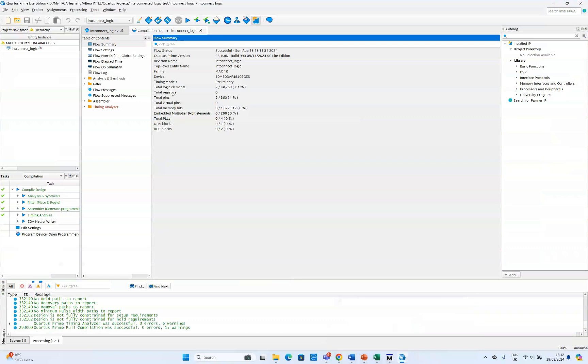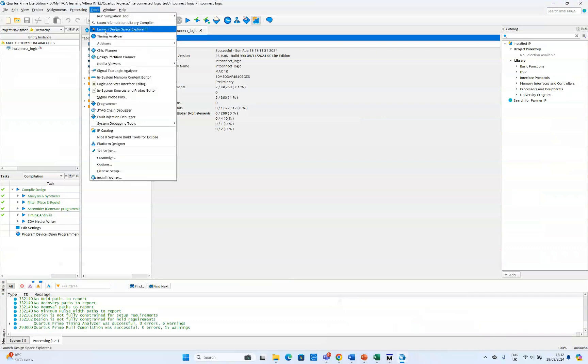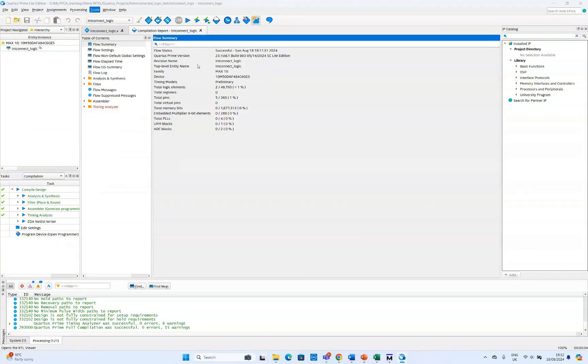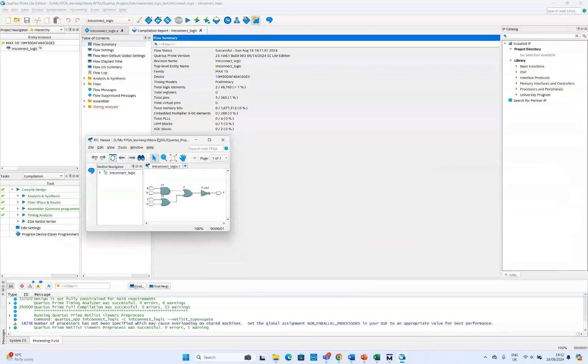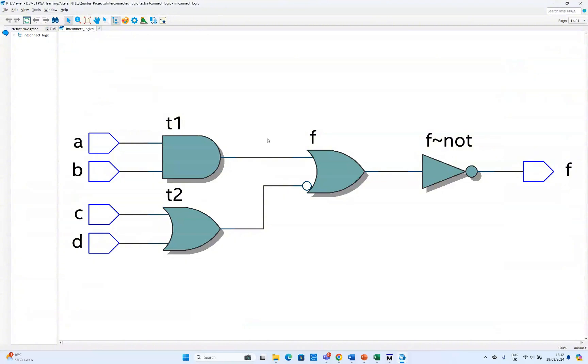So another thing we would like to show you is the netlist or netlist diagram. So if you go to the netlist viewer and if you click the RTL viewer, then you can see the schematic created from our Verilog code and it looks like this. So the only extra thing here is this NOT gate. So as we discussed, we are using this NOT gate to get the correct output at the Max 10 development board from our logic.